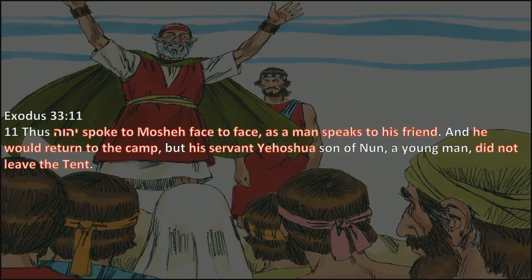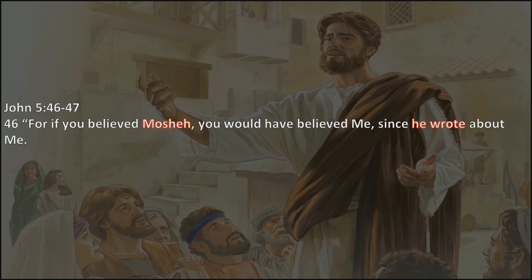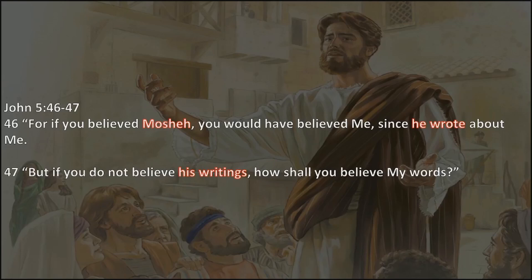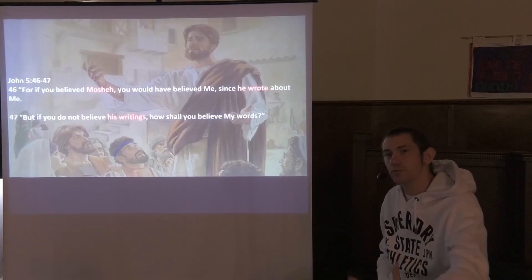Exodus 33:11 says Yehovah spoke to Moshe face to face in the tent of meeting, and Moshe would return to the camp — but his servant Joshua son of Nun, a young man, did not leave the tent. So when Yehovah spoke to Moshe, Joshua stayed in the tent, and the scriptures tell us Joshua wrote the Torah of Moshe. John 5 says if you believed Moshe you would have believed me, since he wrote about me — but if you do not believe his writings, how shall you believe my words?